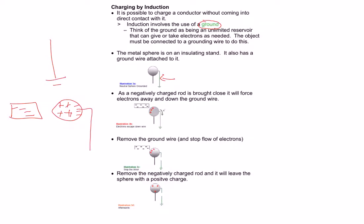Because the metal ball is connected to ground, the extra negative charges being pushed away actually go down the wire — they're chased down into the ground and gone. Without touching the rod to the sphere, just getting close pushes the negatives away down the wire. Then we cut the ground wire — disconnecting it — so those electrons that went into the ground can't get back up.